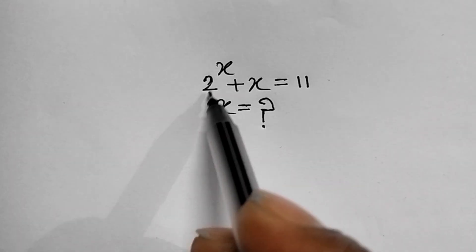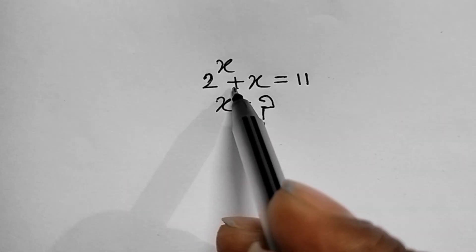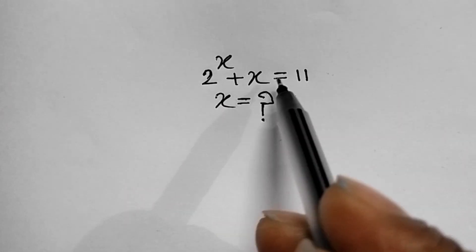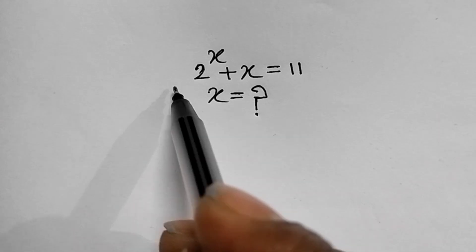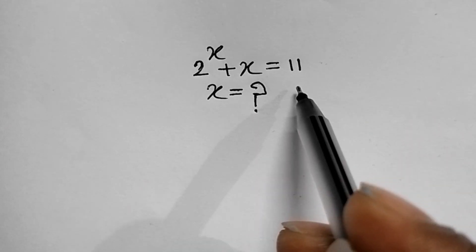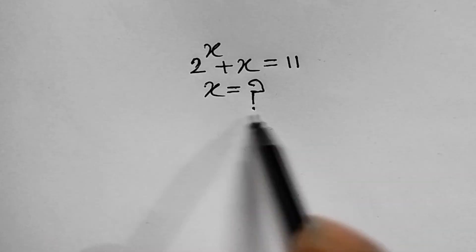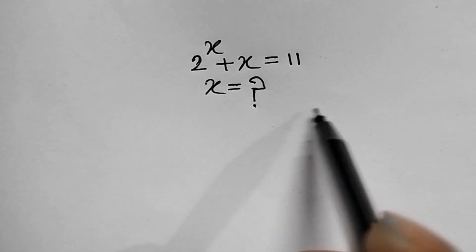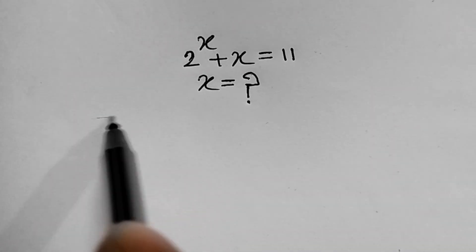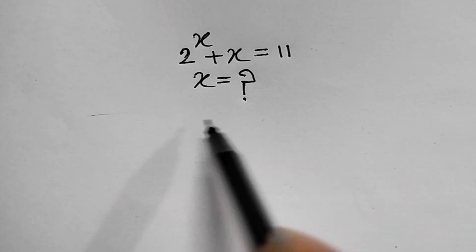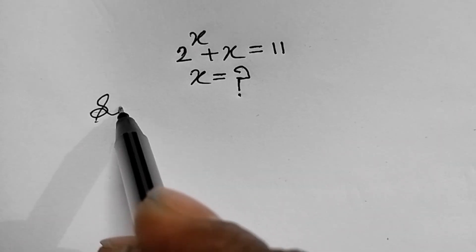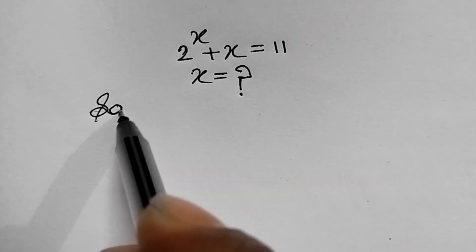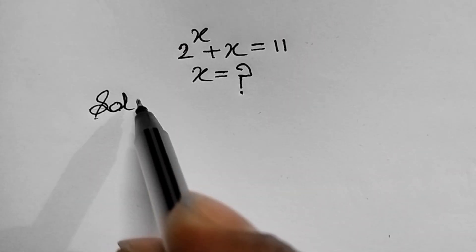2 to the power x plus x equals 11. This is our question. We will have to find the value of x. How to find the value of x? It's very easy. Let's see the solution.